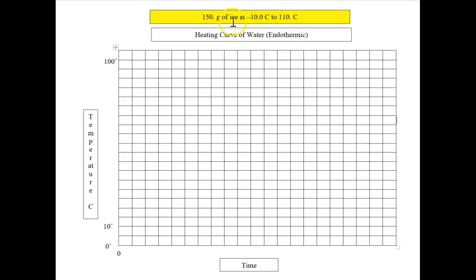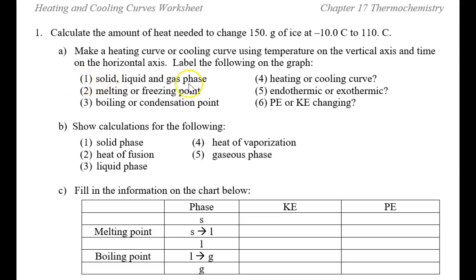Put the problem in the yellow box at the top so we know what we're working with and don't forget the quantitative part. Number one asks for the phases. Number two is the phase change — melting or freezing point. Number three is the other phase change — boiling or condensation point. We've already labeled that it's a heating curve and that it's endothermic, and then we need to label the potential and kinetic energy changes that take place.